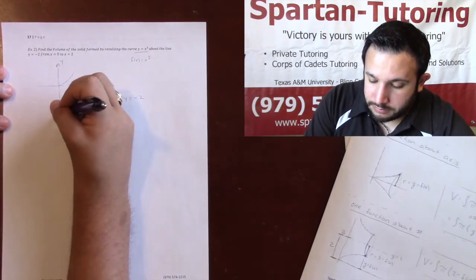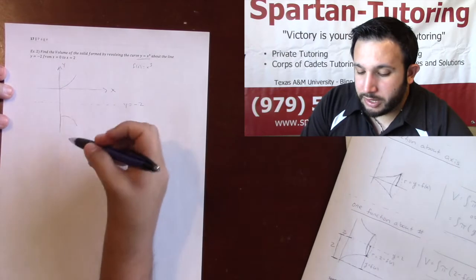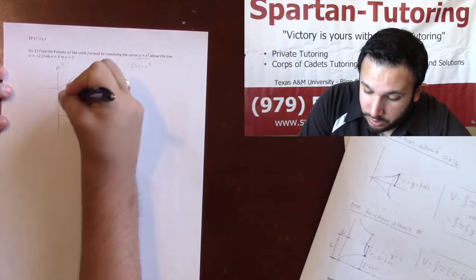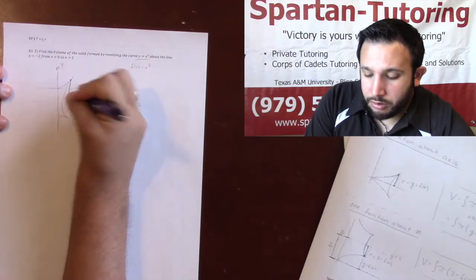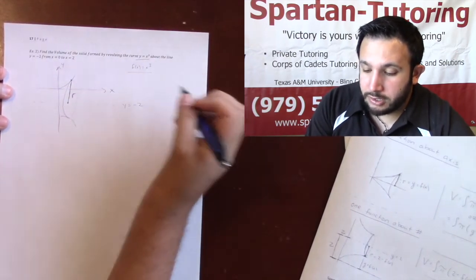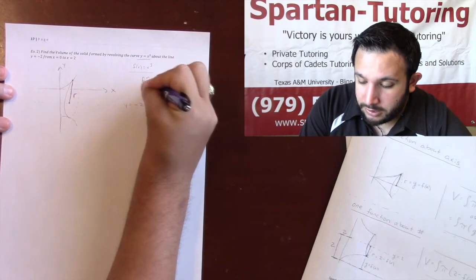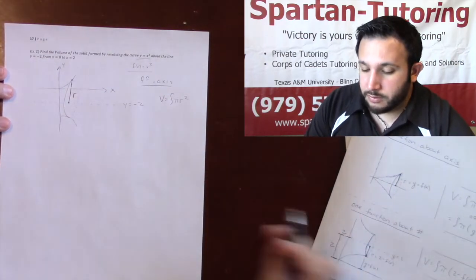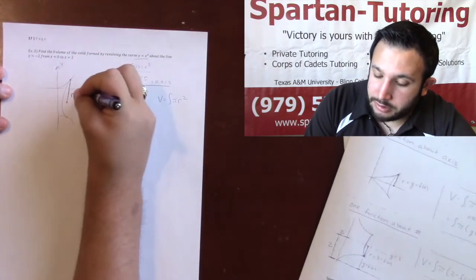We're going to rotate this about y equals negative two. When I rotate about negative two, here will be my disc and here will be my radius — there's your r. I don't know what r is yet. The reason I know I'm using disk-washer is one function of x rotated about y equals negative two, which is parallel to the x-axis. Function equals the axis, so volume equals the integral of pi r squared.